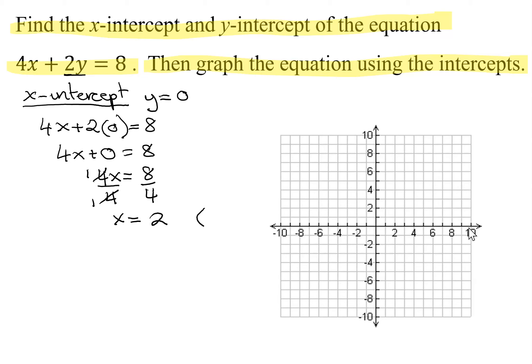Remember, intercepts need to be written as ordered pairs. So the x-coordinate is 2 and the y-coordinate is 0.